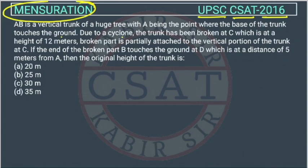The broken part is partially attached to the vertical portion of the trunk at C. The end of the broken part B touches the ground at D, which is at a distance of 5 meters from A. We need to find the original height of the trunk.